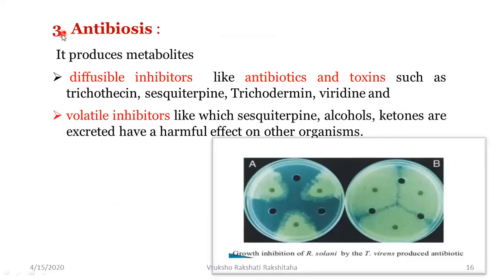The third mechanism is antibiosis — Trichoderma produces different metabolites. Some are diffusible inhibitors like antibiotics and toxins, for example Trichothecene, Sesquiterpene, Trichodermine and Viridine. Along with these, volatile inhibitors like sesquiterpenes, alcohols and ketones are also produced. These are excreted and have a harmful effect on organisms that act as pathogens.